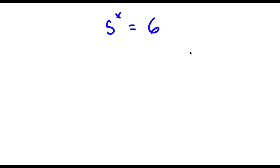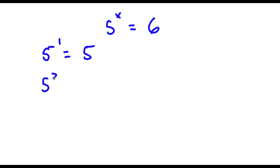Our problem here is 5 to the power of x is equal to 6. Just simply taking a glance at this problem, I know that x is going to be a decimal. Because 5 to the power of 1 is equal to 5, and 5 to the power of 2 is equal to 25. And 6 is somewhere in between 5 and 25, meaning x is somewhere in between 1 and 2.